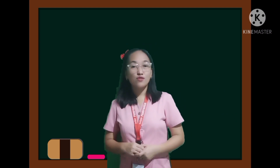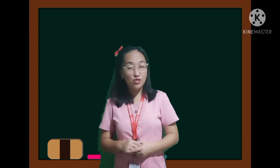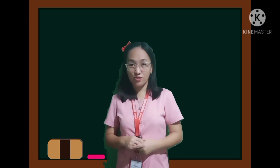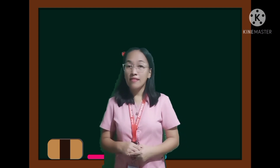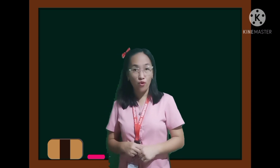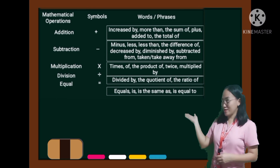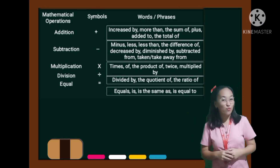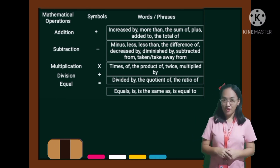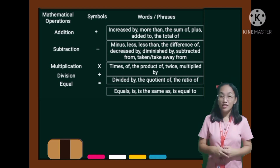To teach our kids easily in the translation of word phrases into algebraic expressions and equations, let them familiarize or master the words and phrases related with symbols or operations. Give them time to master this so that when giving an activity, it will be easy for them to answer. Let them read it twice or even three times to master it.